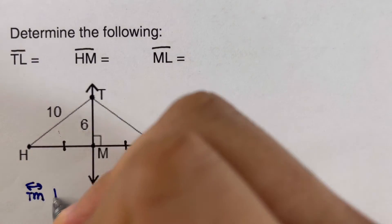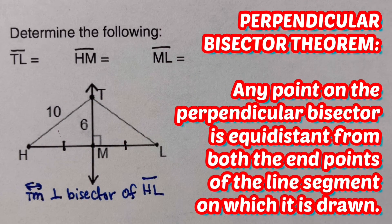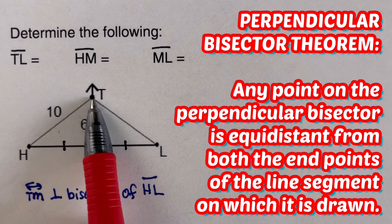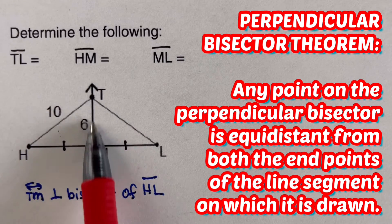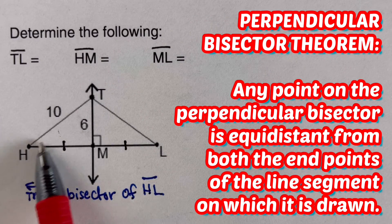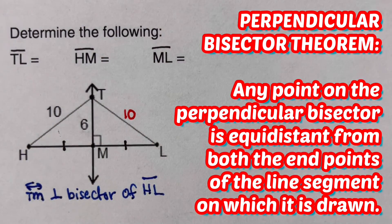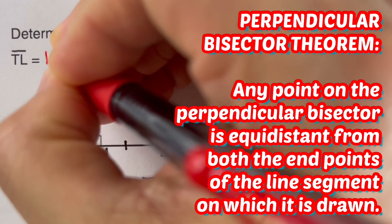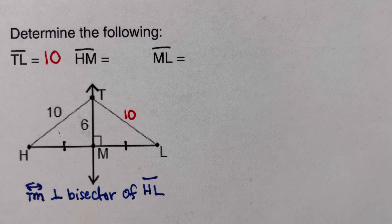Applying the perpendicular bisector theorem: any point on the perpendicular bisector is equidistant from both endpoints of the segment. Since HT is 10, point T is equidistant from H and L, so TL is also 10.